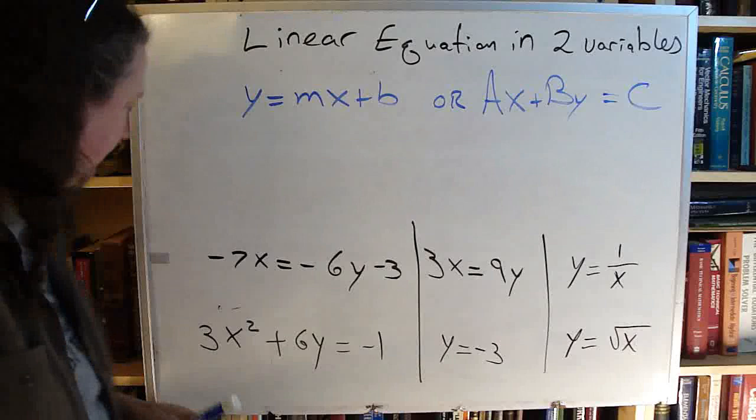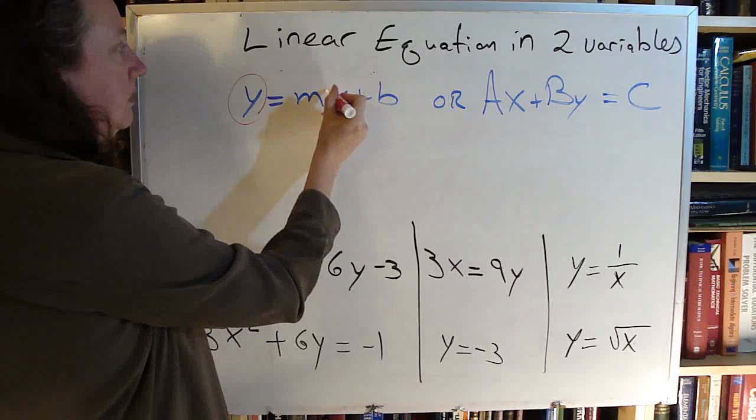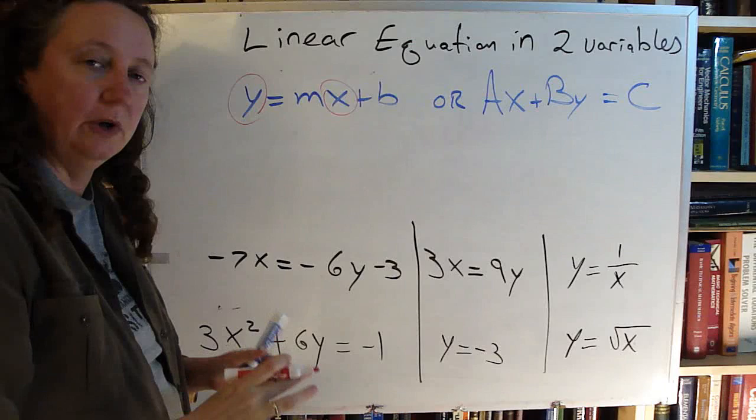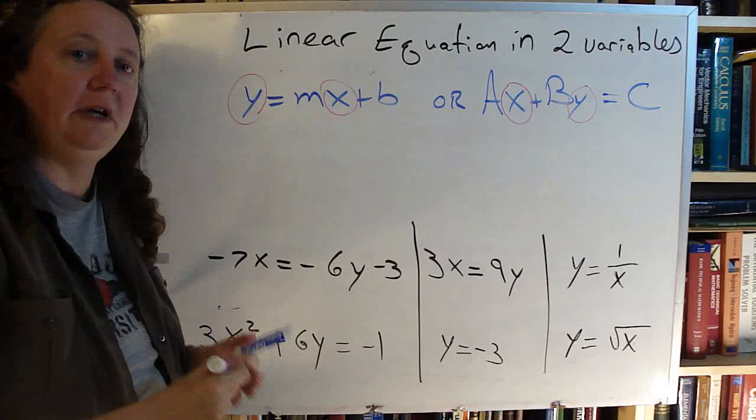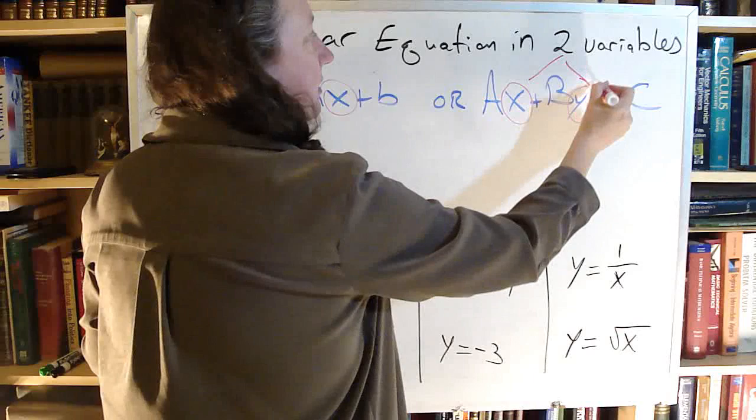So what makes this an equation, a linear equation, in two variables? Well, one of the things is that it has two variables. The m and the b, those are going to be given to you as numbers. The a, the b, and the c, those are given to you as numbers. But the x and the y, those will be your variables. So that is what the two variables means.